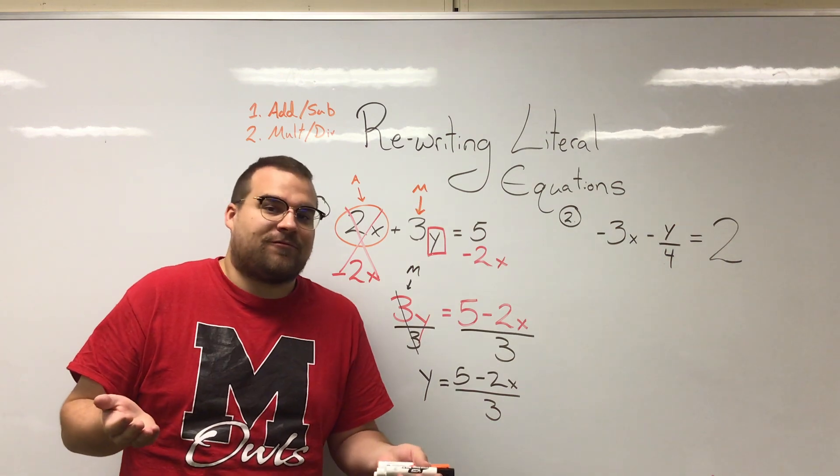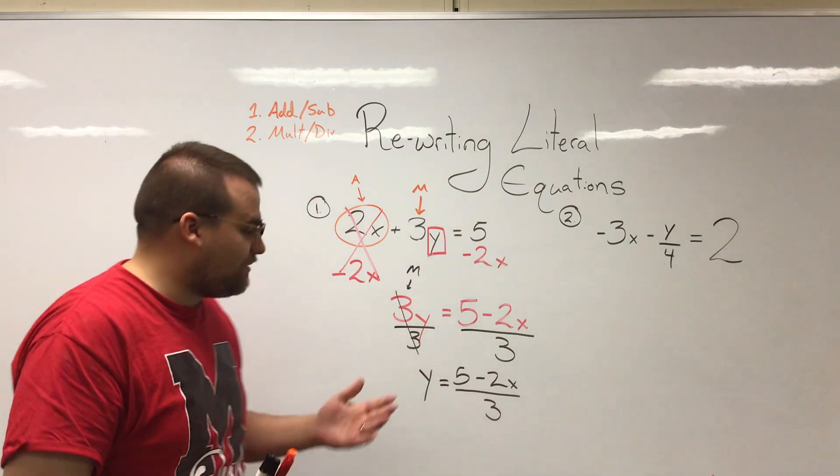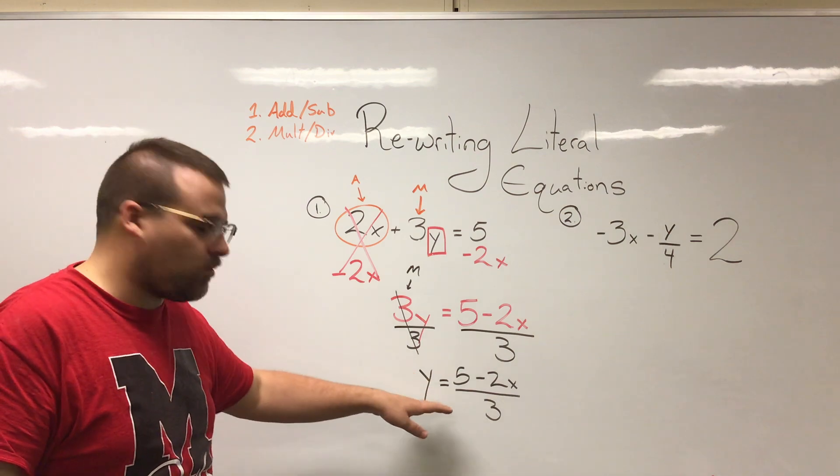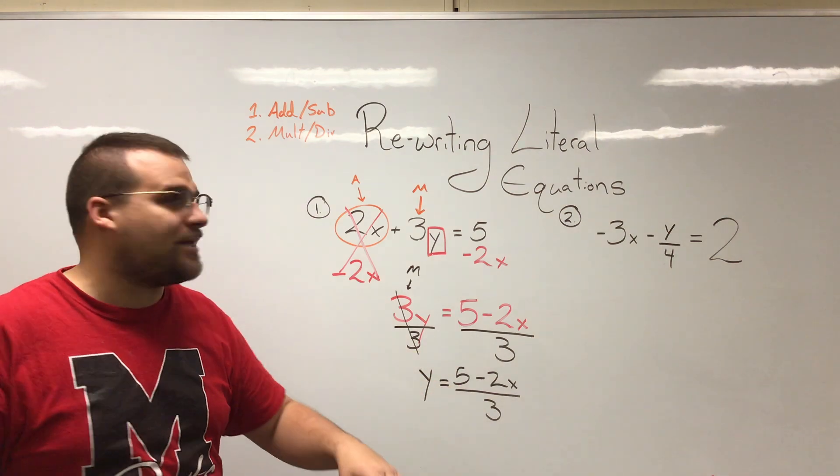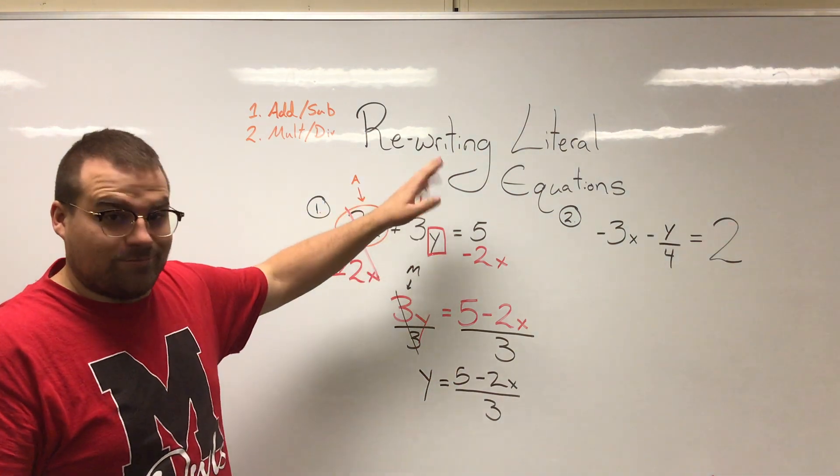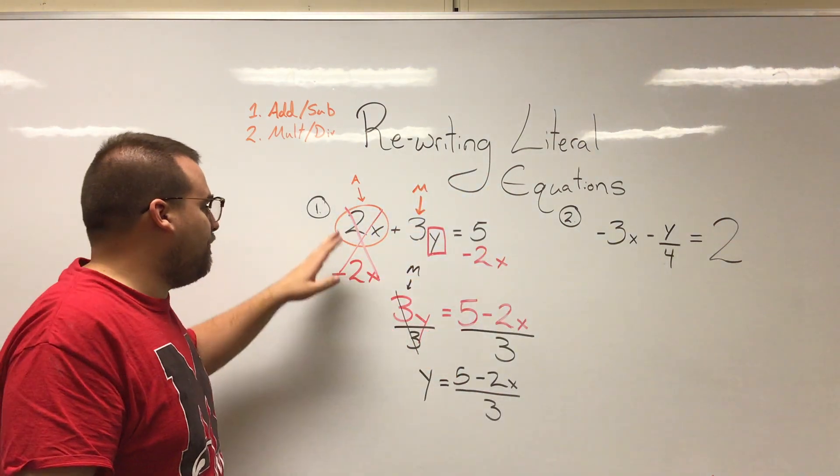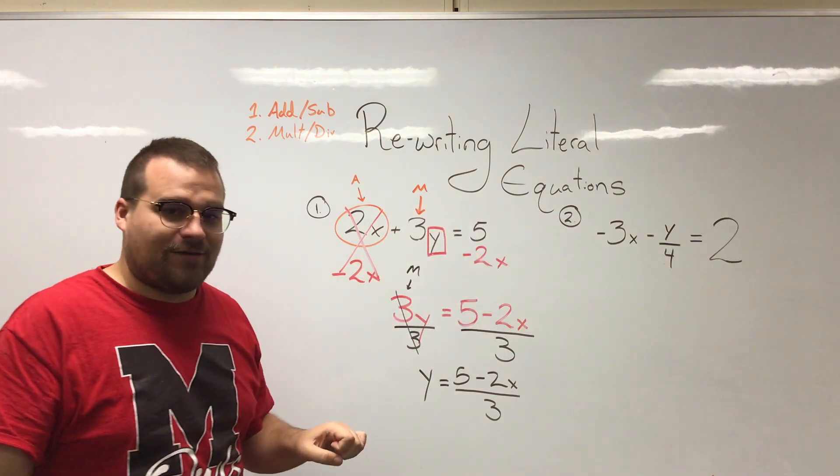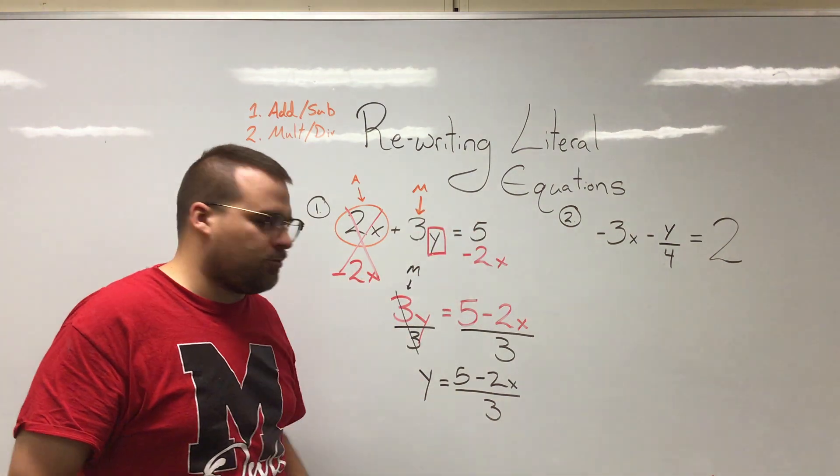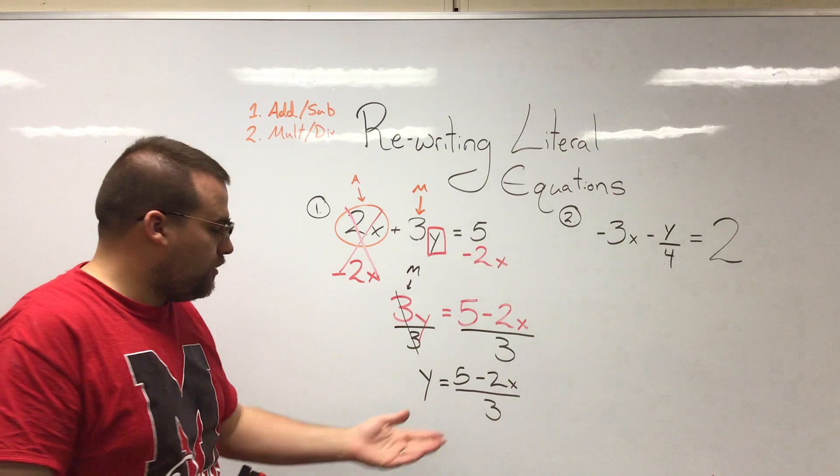But in this problem we're just rewriting the equation because literally that's what we're talking about, rewriting equations. Saying instead of all this equals 5, y equals all this. So that's how we do our first problem.